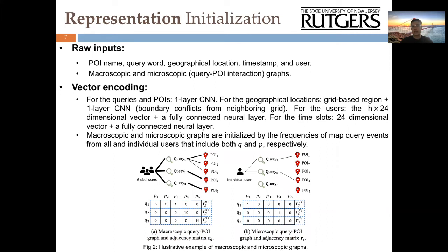Secondly, we create two types of query-POI interaction graphs, which are called macroscopic and microscopic graphs, as shown in Figure 2. The general idea is to reflect the clicked frequency of POI queries from both all users and individual users, in terms of adjacency matrices and query vectors, respectively. Here, the query frequency can also be considered as the user query preferences.